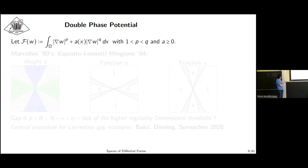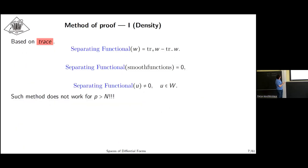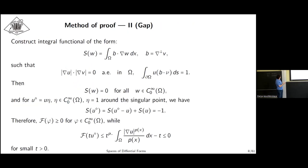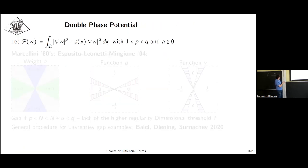Another model quite popular is the so-called double phase potential. This is a variable exponent. One can study similar problems with double phase potential and similar difficulty survives. For this case, the example was refined in this paper.